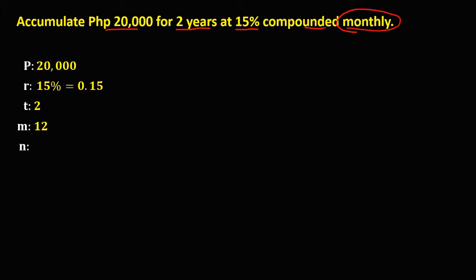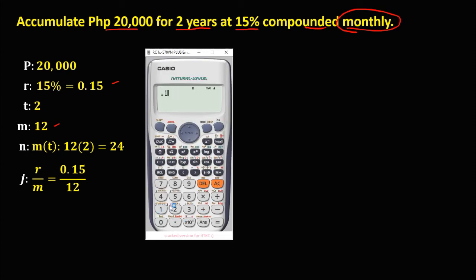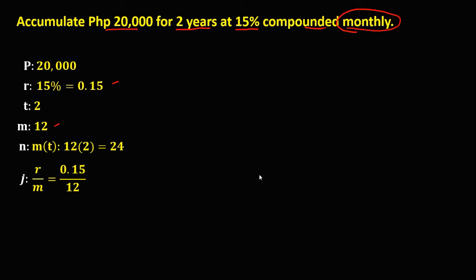For the number of periods, that's the compounding period times the time. Since the compounding period is 12 and the time is 2, the number of periods is equal to 24. For the interest per period, that's the rate over the compounding period. The rate is 0.15 divided by 12, which gives 0.0125. This is the interest per period.